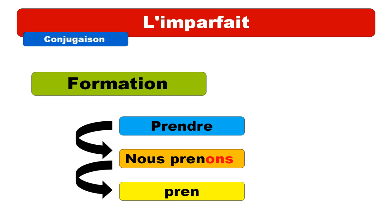Let's take a third example: prendre — to take. At the present form you get 'nous prenons'. Same approach: you spot the ending '-ons', you take it away, and then you get 'pren' — p-r-e-n.